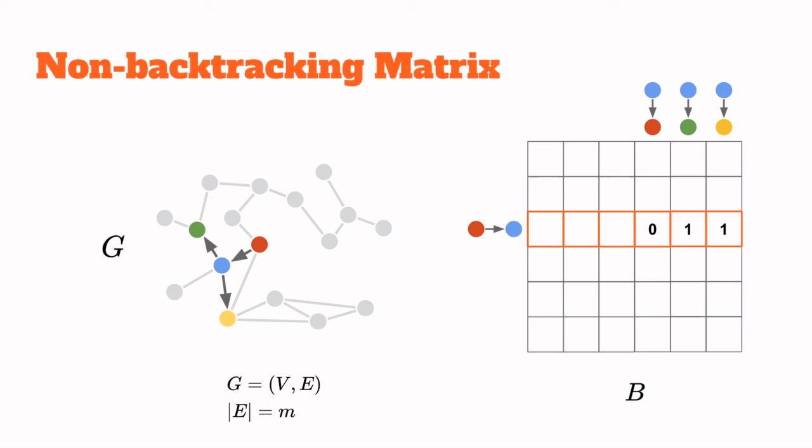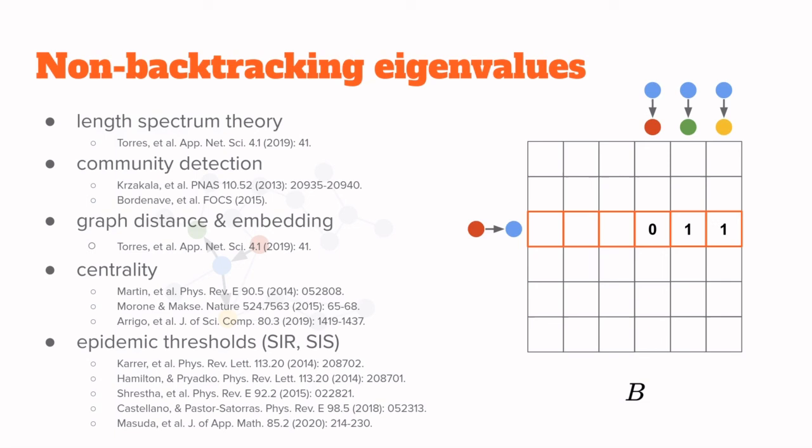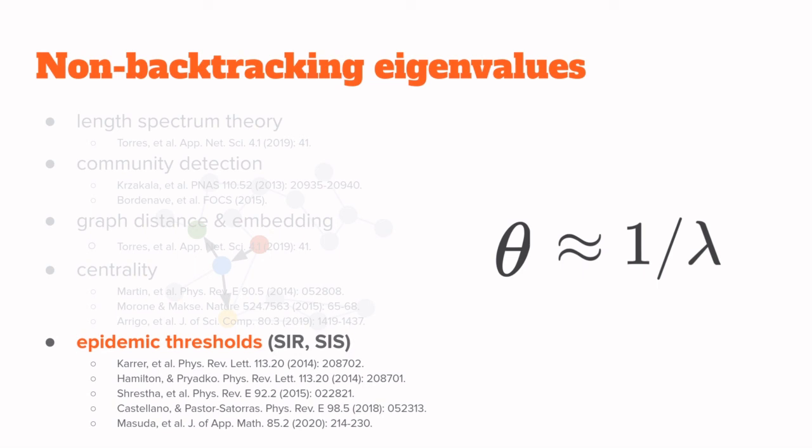The eigenvalues of this matrix have multiple applications. For example, they have been discussed in terms of length spectrum theory, community detection, graph distance, graph embedding, and they have already been used in the past to define node centrality. But let me focus on this last application. It is known that 1 over the leading eigenvalue lambda is a good approximation of the epidemic threshold of certain kinds of spreading dynamics, like the SIR model, for example.